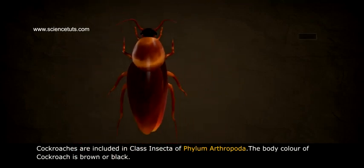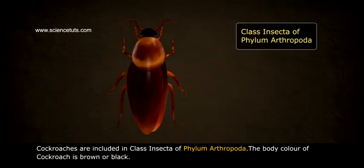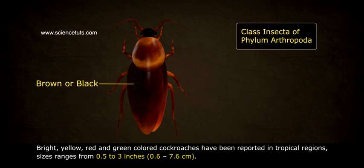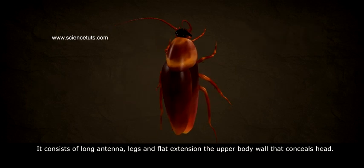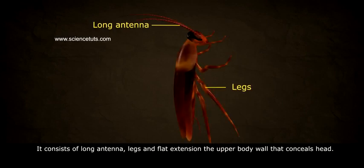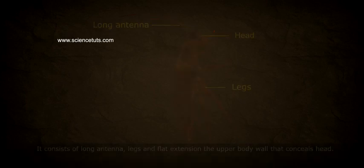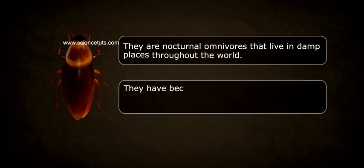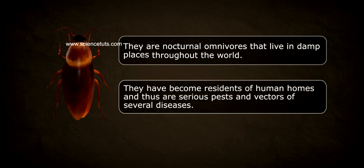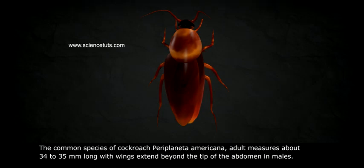Cockroaches are included in class Insecta of phylum Arthropoda. The body color of cockroach is brown or black, though bright yellow, red, and green colored cockroaches have been reported in tropical regions. Sizes range from 0.5 to 3 inches (0.6 to 7.6 cm). They are nocturnal omnivores that live in damp places throughout the world and have become serious pests and vectors of several diseases.